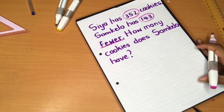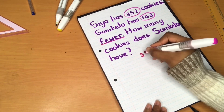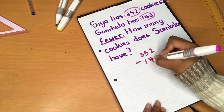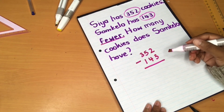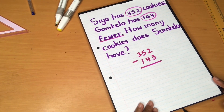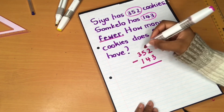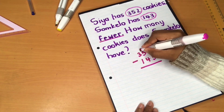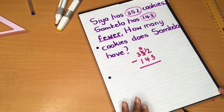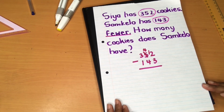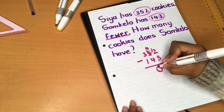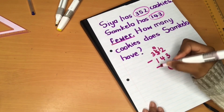Now we need to identify the numbers that will make up our sum, and these numbers are 352 and 143. Our sum will then be 352 minus 143. Can we subtract 3 from 2? No, because 3 is a larger number than 2, therefore we need to borrow from our neighbor. When we borrow from our neighbor, this will then be 4 and 12. Then we say 12 minus 3 equals 9, 4 minus 4 equals 0, 3 minus 1 equals 2.